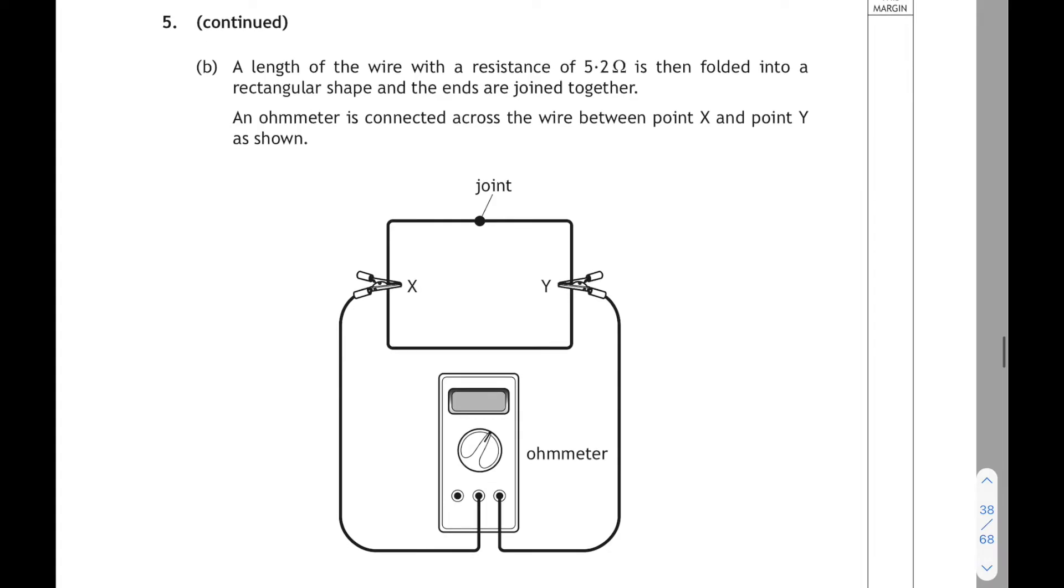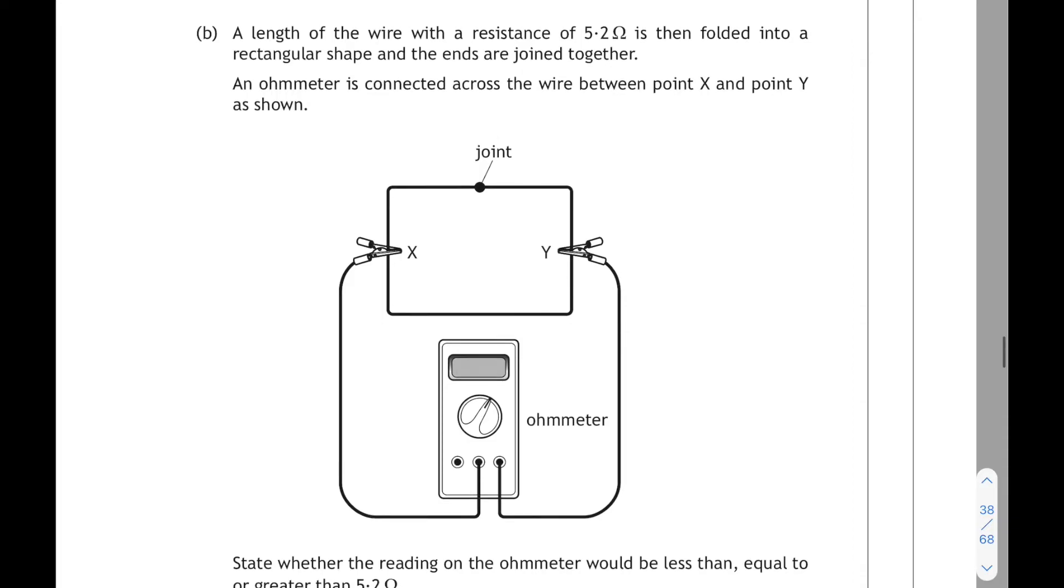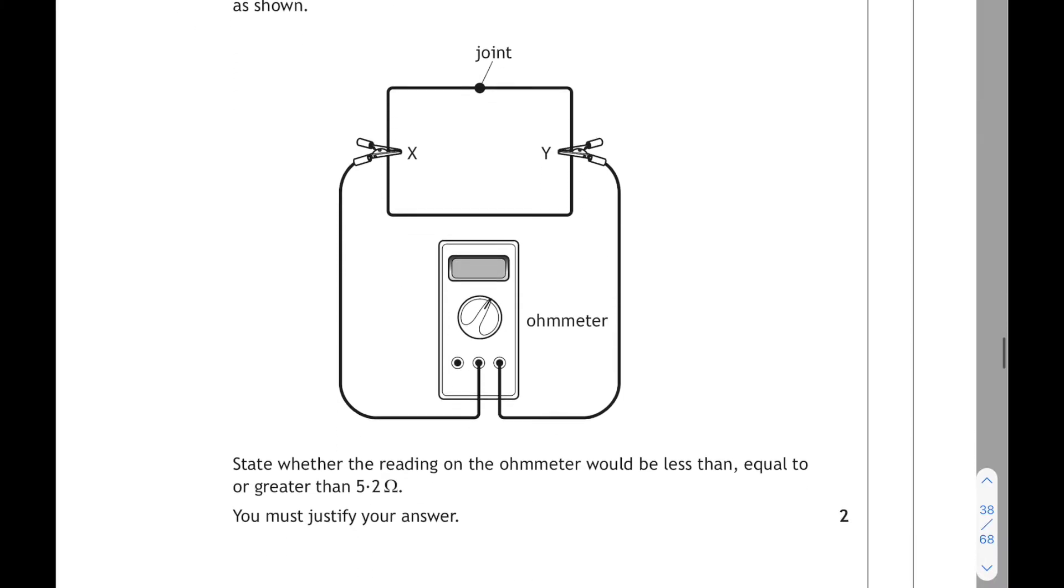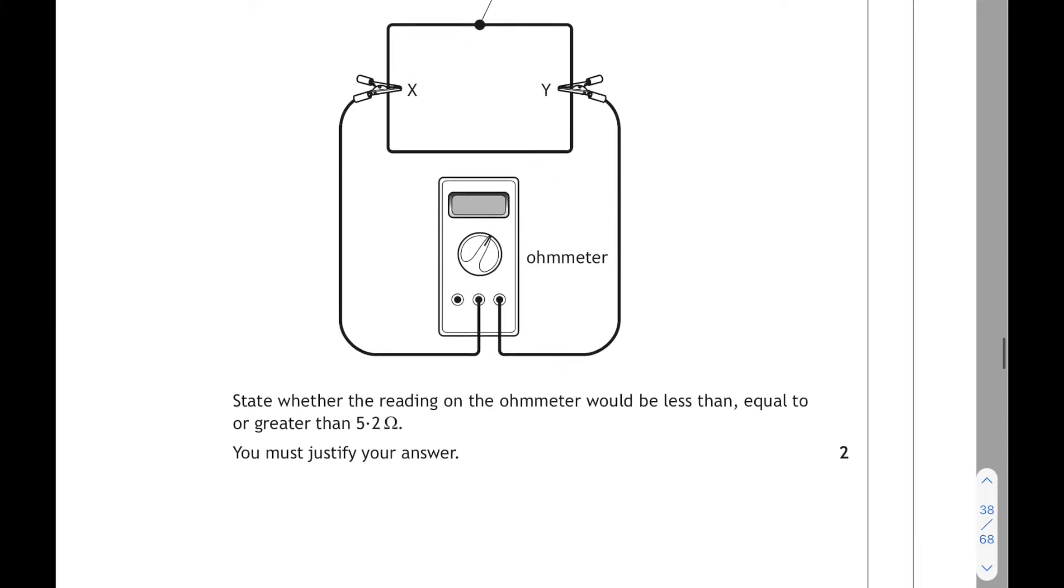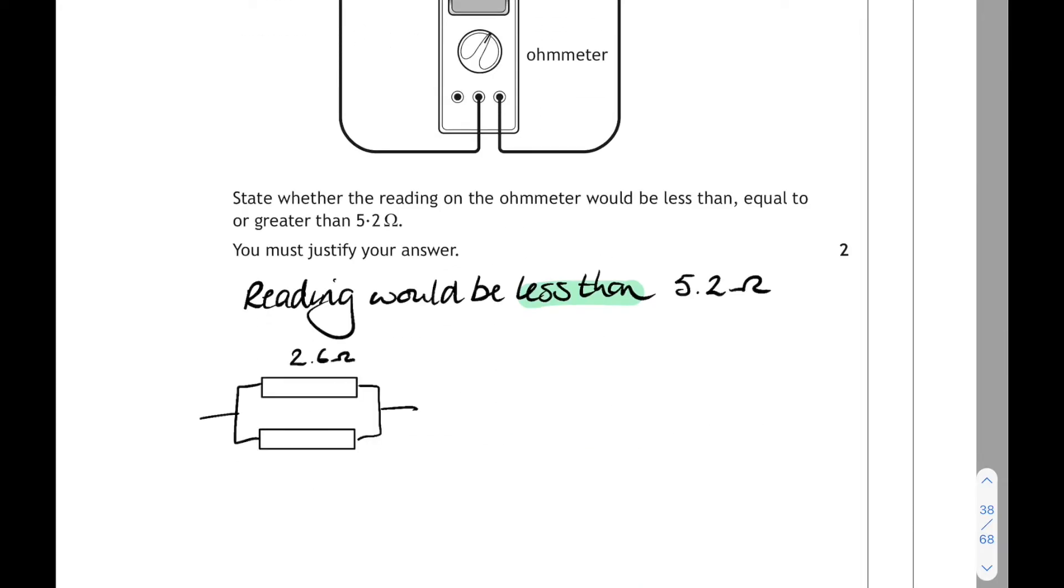Still in question 5, part B this time. A length of the wire with resistance 5.2 ohms is folded into a rectangular shape and the ends are joined together. And an ohmmeter is placed across the wire between points X and Y. That full length of wire there is 5.2 ohms. And we have to state whether the reading on the ohmmeter would be less than, equal to, or greater than 5.2 ohms. Well, the reading is going to be less than 5.2 ohms. Because the top half of the wire is 2.6 ohms and so is the bottom half and they are in parallel. And if you work out the total resistance of those two in parallel is 1.3 ohms.